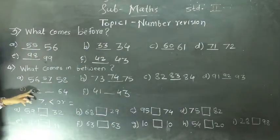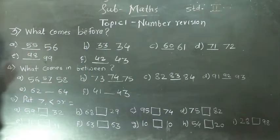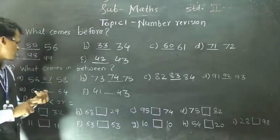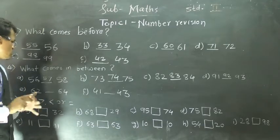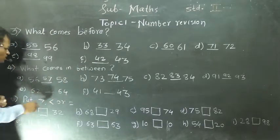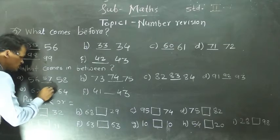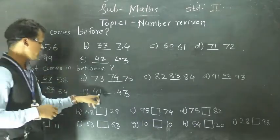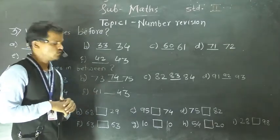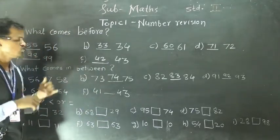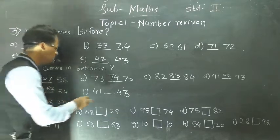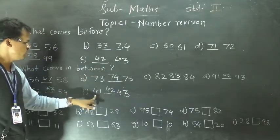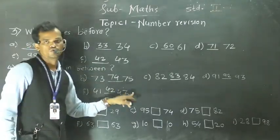Then next: 62 and 64. We have to find the middle number. Series is: 61, 62, 63, 64. So in between these two numbers: 62, 63, 64 — 63 is the answer. Now it is complete. Then next: 41 and 43. We have to find the middle number. So: 41, 42, 43. So here 42 will come. So it completes the series: 41, 42, 43.